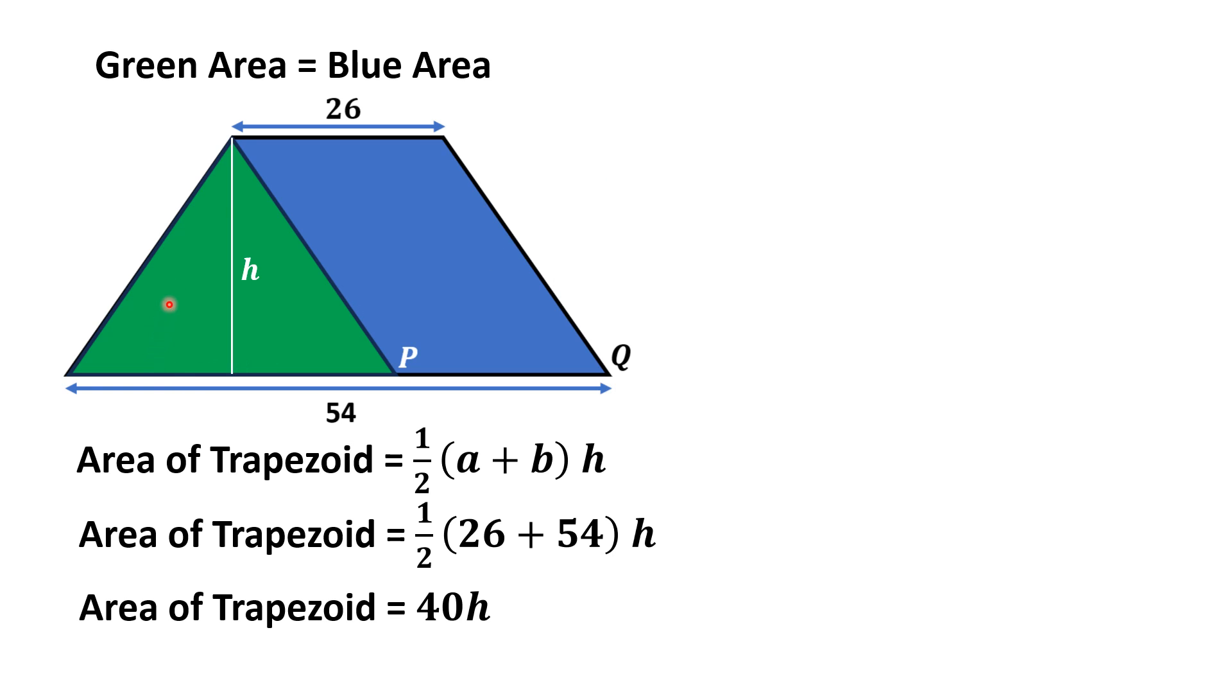Now we concentrate on this green shaded area which is actually the area of a triangle. We know that area of a triangle is equal to 1/2 times base times height. The height is h and the base is 54 minus PQ.